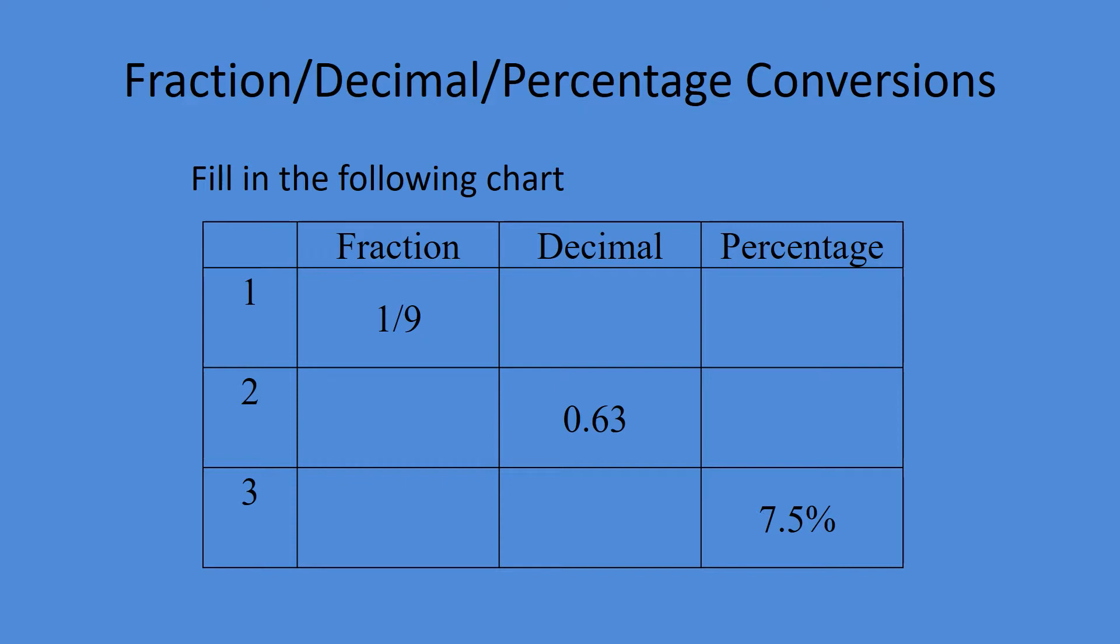Let's continue on and do these examples. Fractions: one divided by nine is going to yield us about 0.11. To go this way, we're going to multiply by a hundred, so you get 11%.